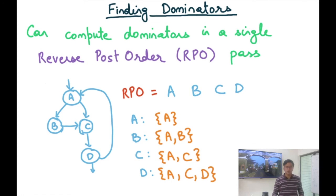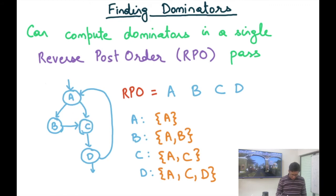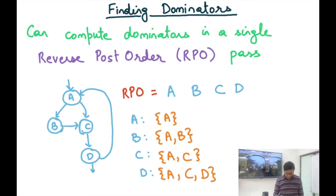Based on this, I can compute my dominators. For A, the dominator is just A itself — that's the entry node. For B, it's {A, B}, because I look at all incoming paths and intersect. For C, it's the intersection of what comes from B and what comes from A, which is just A, and then I union C with it — so {A, C}. Notice B is not in C's dominator set because it's not on both incoming paths. For D, the dominators are {A, C, D}. Dominators also include the node itself, as the dominator relation is reflexive.